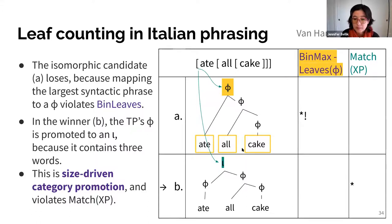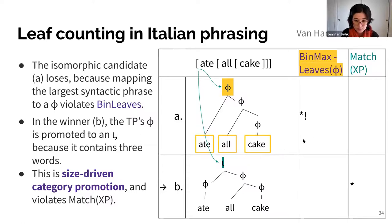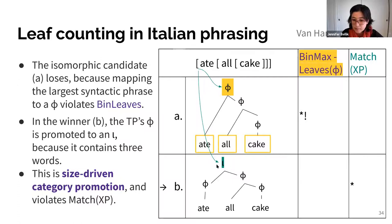This is a syntax-prosody mismatch due to category change. In the tableau, the isomorphic candidate has a phi for each XP, and the top phi violates bin-max-leaves because it contains all three words — but there are no match violations. In the second candidate, there is a match violation because we're no longer matching the largest XP with a phi — instead it has become an intonational phrase, promoted to the iota level. That avoids the bin-leaves violation but incurs the match violation. This candidate wins because bin-leaves is ranked over match. This is size-driven category promotion driven by leaf counting binarity.